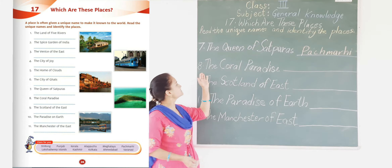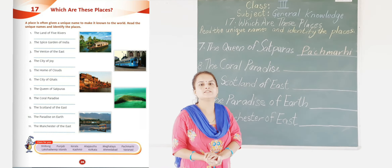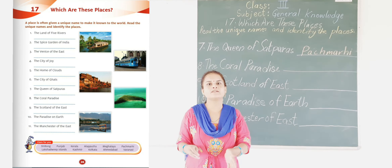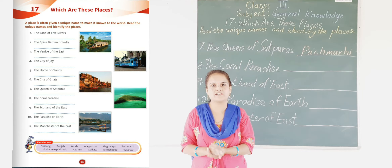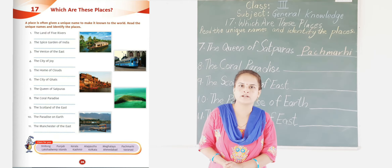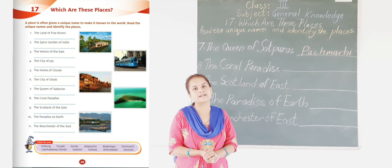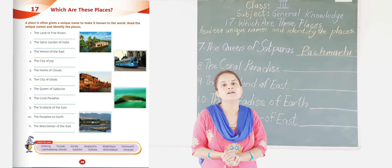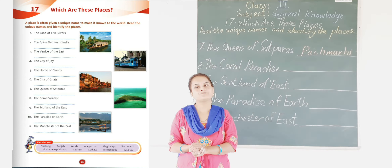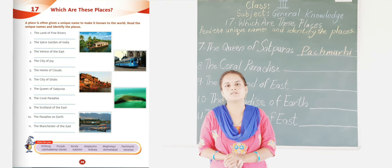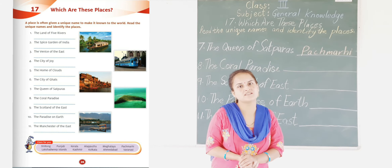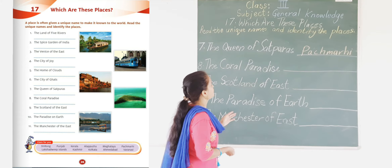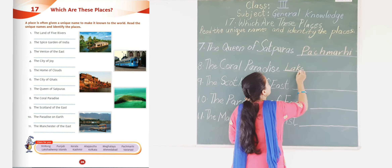Now the next one is the Coral Paradise. This place is located near the sea — it is a coastal area and also an island. The Coral Paradise refers to the Lakshadweep Islands, which has Amini Island Resort and is famous for beaches and swimming. The Coral Paradise is Lakshadweep Islands, in India.